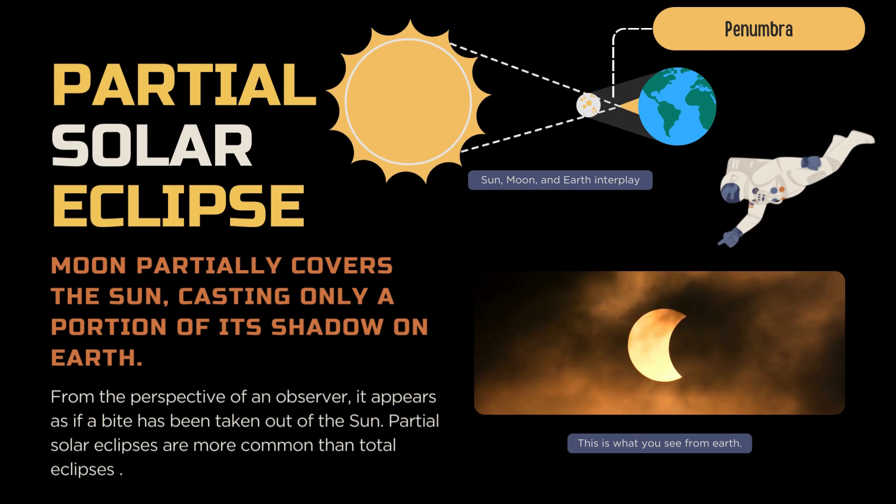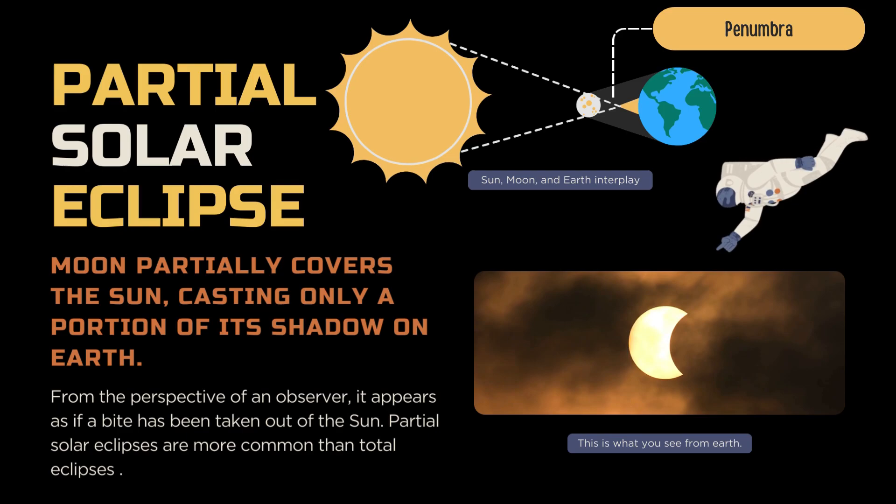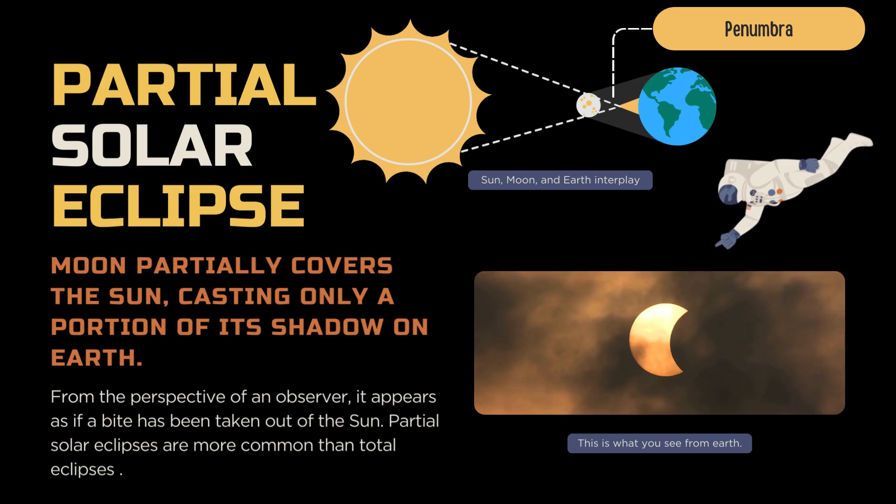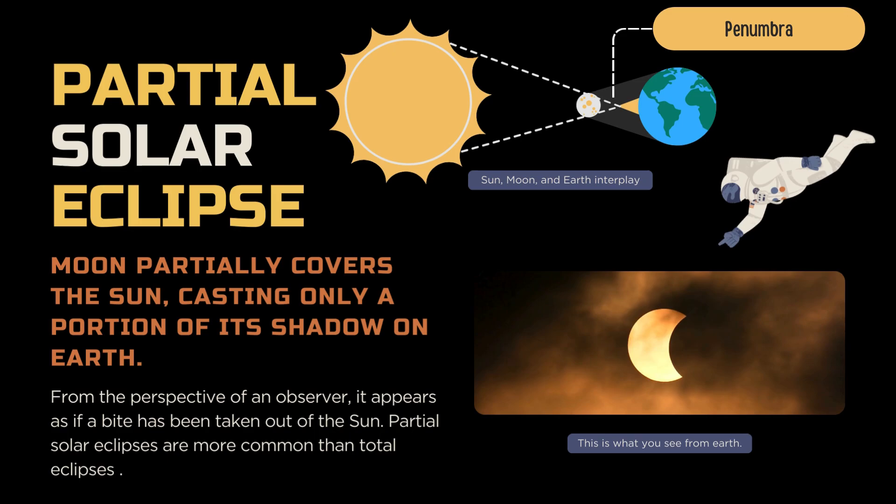The second type is the partial eclipse. People within the penumbral shadow see only a partial eclipse, where only a part of the sun is obscured. From this view, outside the path of totality, the moon passes in front of the sun as if it appears to take a bite out of the sun.